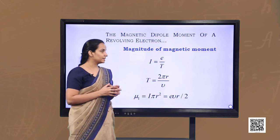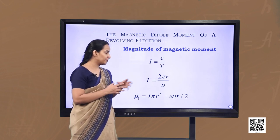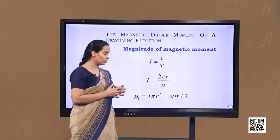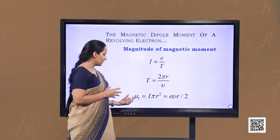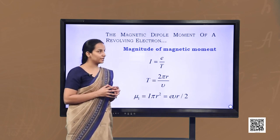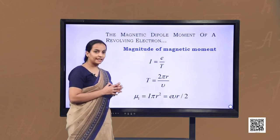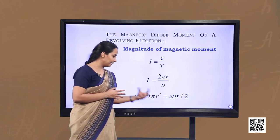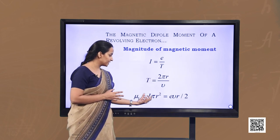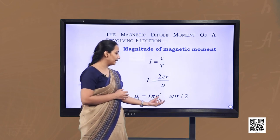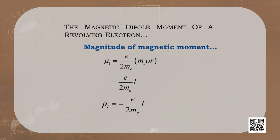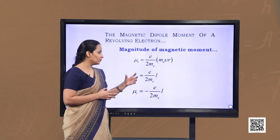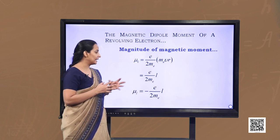The electron of charge e = −1.6×10⁻¹⁹ C revolves around the nucleus, constituting a current i = e/T, where T is the time period for one revolution given by 2πr/v. The magnetic moment due to the revolving electron μl is the product of current and area, giving μl = evr/2. Multiplying and dividing by the electron mass mₑ, we get m·v·r in the numerator, which is the orbital angular momentum L.